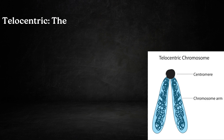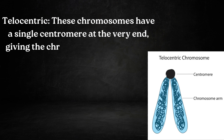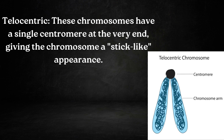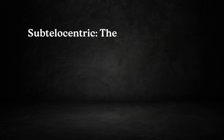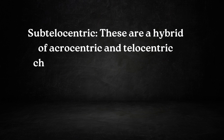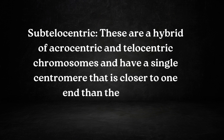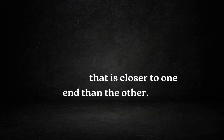Number fourth is telocentric. These chromosomes have a single centromere at the very end, giving the chromosome a stick-like appearance. Number five is sub-telocentric. These are a hybrid of acrocentric and telocentric chromosomes and have a single centromere that is closer to one end than the other.